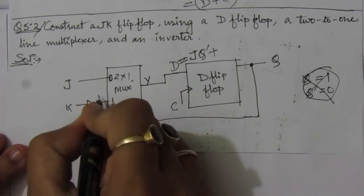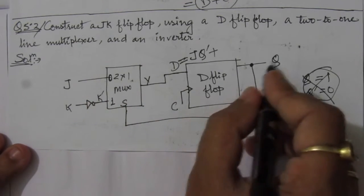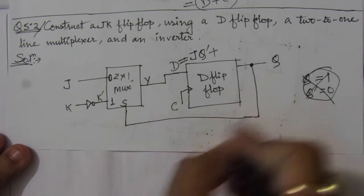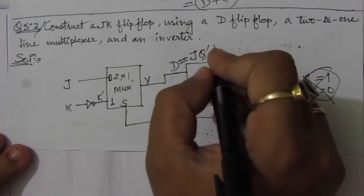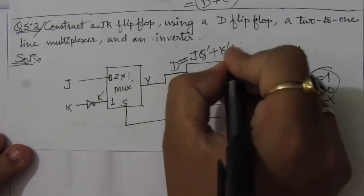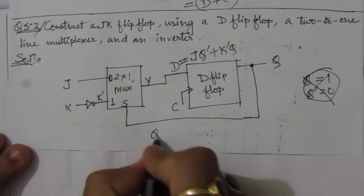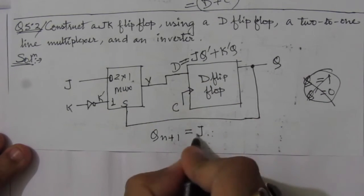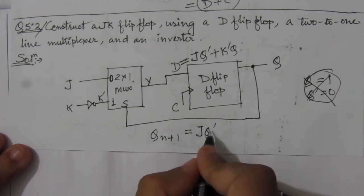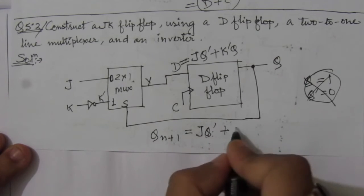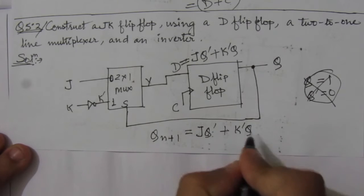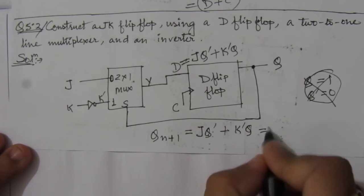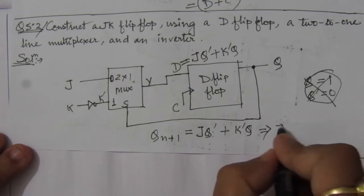Since we have an inverter, we get K-complement at that input. So when Q equals 1 (S equals 1), we have K-bar·Q. Therefore, the next-state output Q(n+1) equals J·Q-bar plus K-bar·Q — the J times present-state complement plus K-bar times present-state output. This is nothing but the characteristic equation of a JK flip-flop.